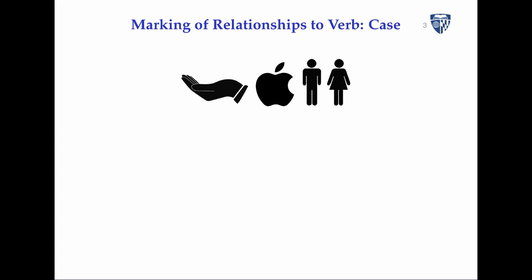We also need to mark the relationship of noun phrases to the verb, and one way to do this is case. Consider a sentence involving a giving action, an apple, a man, and a woman. If you just name all the content words — give, apple, man, woman — you don't actually know who is giving what to whom.